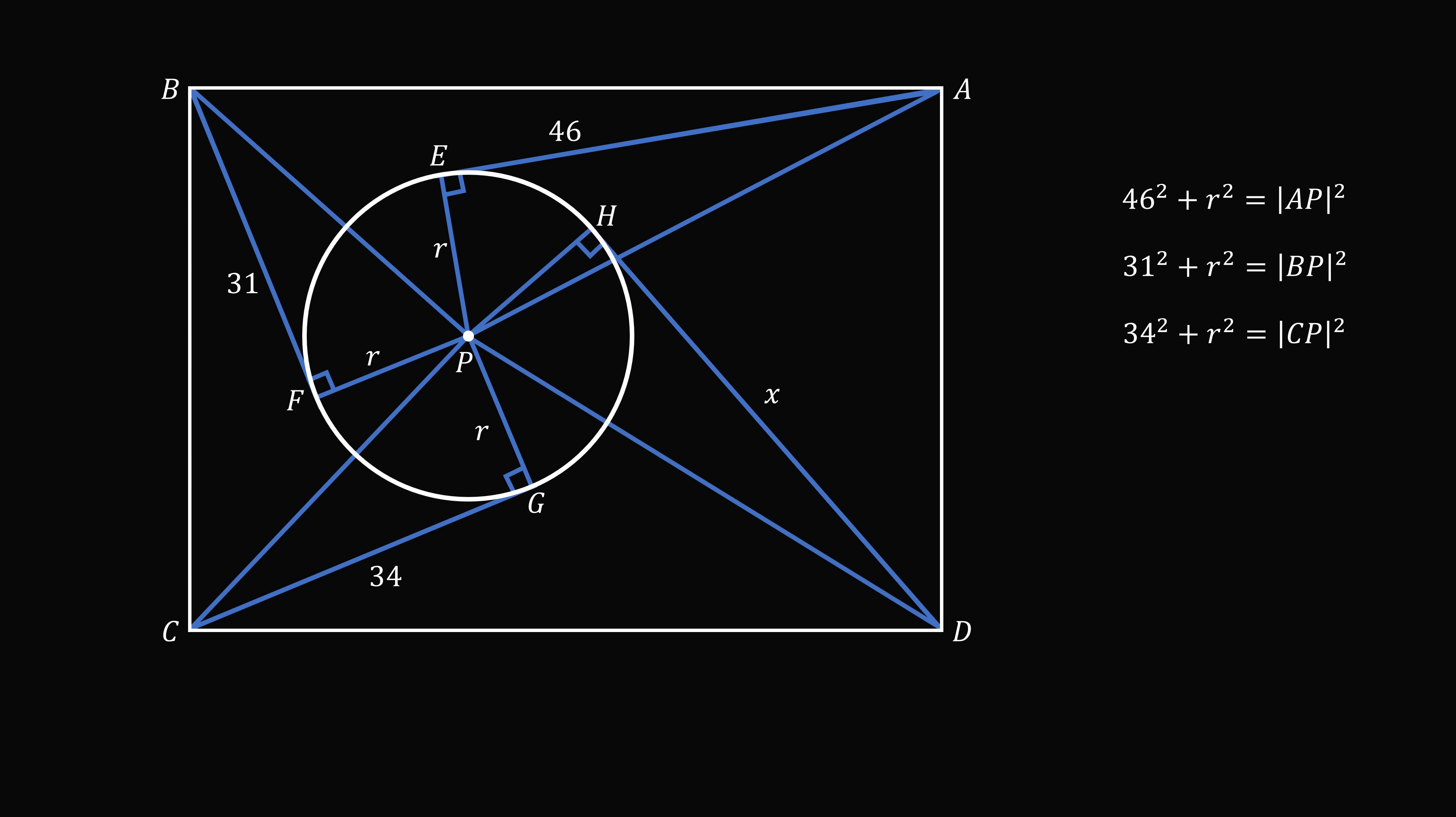Finally construct the right triangle DHP, where HP is equal to R. Thus we have X squared plus R squared is equal to DP squared.